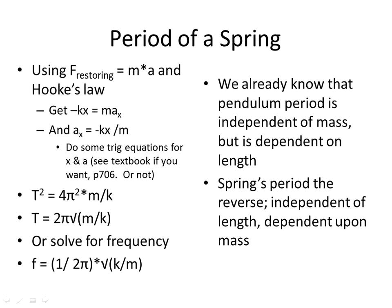This is our physics video on example problems dealing with the period of a spring and a pendulum. We know that Hooke's law gives us negative k times x equals force, and force equals mass times acceleration. Rearranging and doing some trig, we get that T squared equals 4 pi squared times mass divided by k.